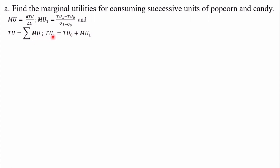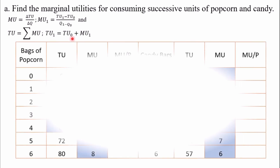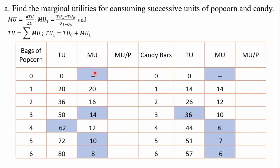Also, total utility is the summation of the marginal utilities. If you want the total utility for the first unit, it is the summation of marginal utility up to that column, or you just take the marginal utility from that particular row and add it to the previous total utility. Let's use the table to get an understanding.